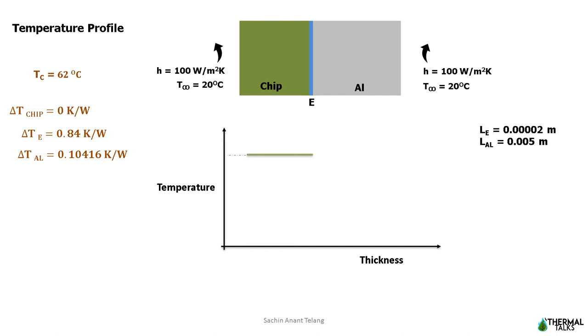So we can draw a graph of temperature versus thickness. There is no temperature drop in the chip and there is a temperature drop of 0.84 Kelvin for 0.02 mm very thin epoxy grease layer and 0.104 Kelvin across 5 mm aluminum sheet. The concept of thermal resistance is very simple. I hope you have understood this very simple yet vital concept.